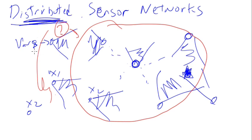So that gives you an idea of what the distributed constraint satisfaction problem is. We try to solve these things in a distributed way. How do you find the correct values for all these variables? Watch the next video.